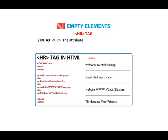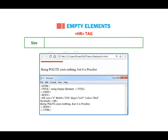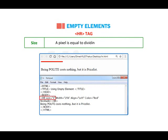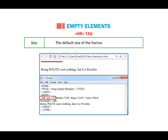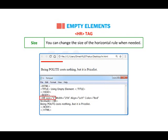The attributes of the hr tag are as follows. Size: specifies the thickness of the line in terms of pixels. A pixel is equal to dividing an inch into 72 points. The default size of the horizontal rule is 3 pixels. You can change the size of the horizontal rule when needed. Example: hr size="4".